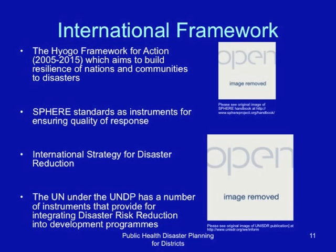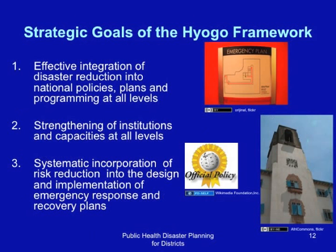Strategic goals of the Hyogo Framework include effective integration of disaster risk reduction into national policies, plans, and programming at all levels, strengthening institutions and capabilities at all levels, and systematic incorporation of risk reduction into the design and implementation of emergency response and recovery plans.